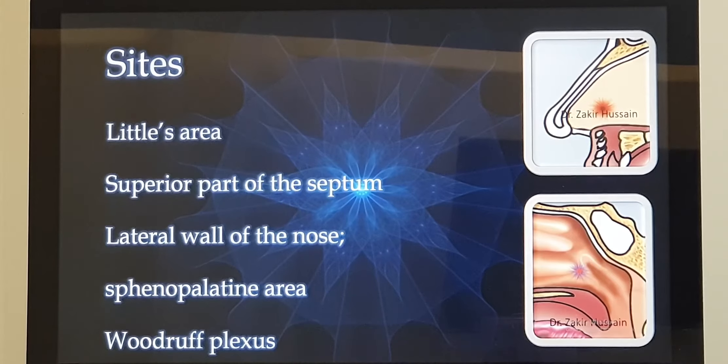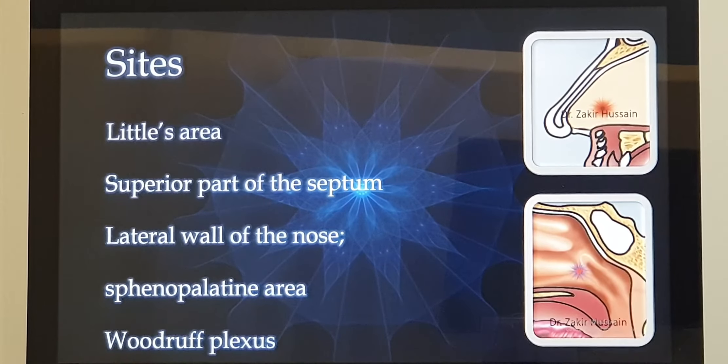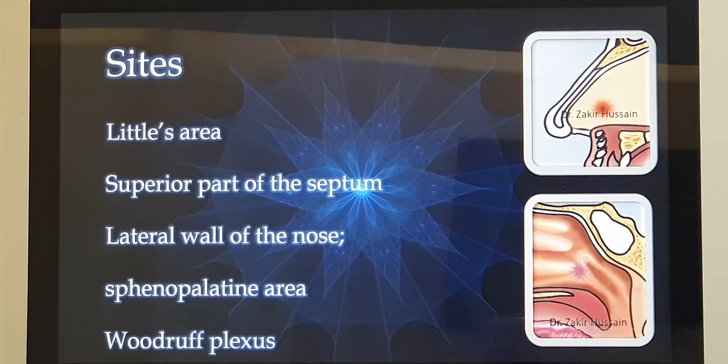So nasal bleed, it can be just one spot, as you see here, or it can be diffused throughout the nose. It can be spot here, or it can be sphenopalatine area, or it can be diffused.